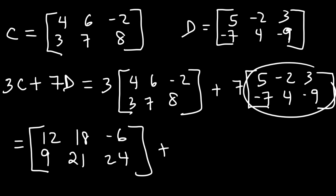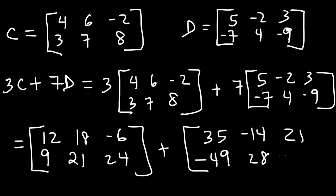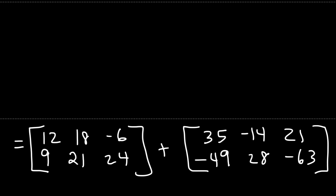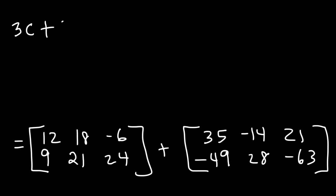And then let's multiply every element in matrix D by 7. So 7 times 5 is 35, 7 times negative 2, that's negative 14, 7 times 3 is 21, 7 times negative 7 is negative 49. And then we'll have 28 and negative 63. Now, let's add the two matrices to get 3C plus 7D.